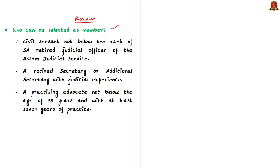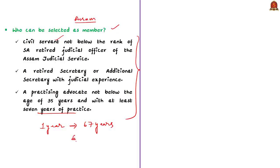A Foreigners Tribunal member in Assam can also be a retired civil servant not below the rank of Secretary or Additional Secretary with judicial experience, or a practicing advocate not below the age of 35 years with at least seven years of experience. The initial appointment is for a period of one year, extendable up to the age of 67 years. Members are recruited by the Gauhati High Court in the case of Assam. There are 100 Foreigners Tribunals functioning in Assam, and in 2019 the Ministry of Home Affairs sanctioned around 1,000 tribunals to be set up in Assam.